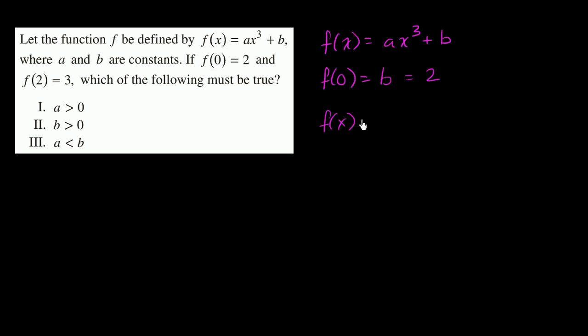So now we know that f of x is equal to ax to the third plus 2. Then they tell us f of 2 is 3. What is f of 2? And I'll just switch colors somewhat arbitrarily. f of 2 now is going to be a times 2 to the third power plus 2.